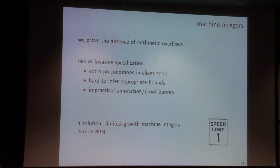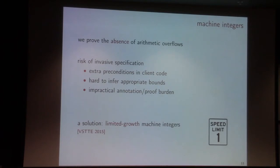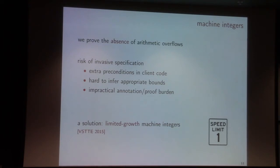In the context of Vocal, we use a solution where we use a very specific class of machine integers which we call "limited growing machine integers." The idea is: think about a counter. Imagine this counter is a 64-bit variable. If I start from zero and increment it by one each time, it would take centuries to make this variable overflow. So it's virtually impossible, in normal human time, to make this variable overflow. That's our idea — we use machine integers that grow very, very slowly.